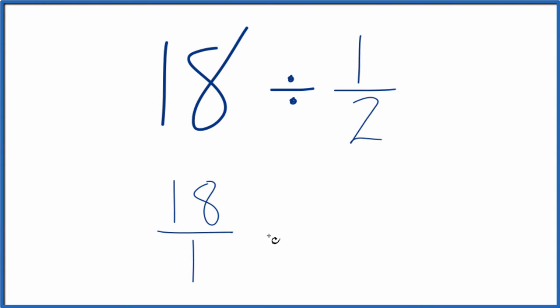Now instead of division, we're going to multiply. We're going to multiply by the reciprocal of 1 half. So the numerator, we move that down here, and the denominator, we move up top. So we have 2 over 1. 2 over 1, that's the reciprocal of 1 half.